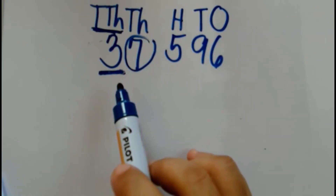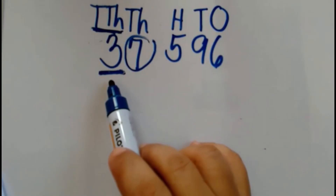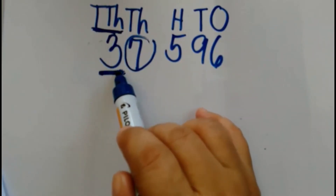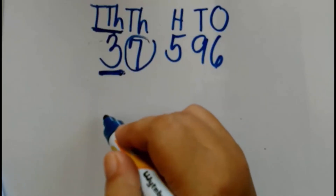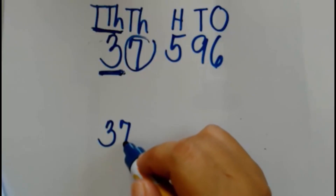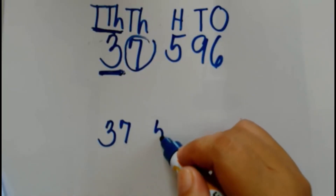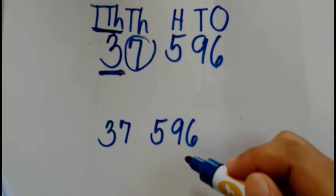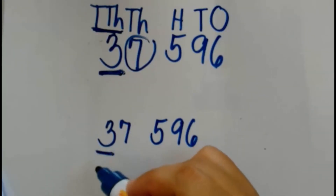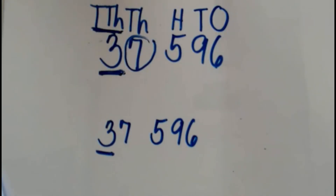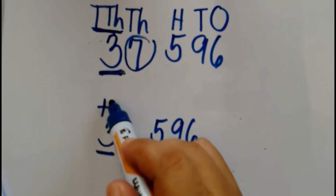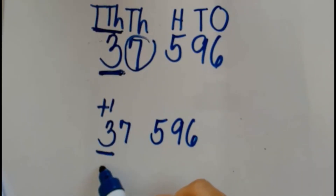Since we will be rounding up, we will add 1 to 3, since 3 is the digit that we are going to round off. So I will rewrite the number 37,596 — the digit we are rounding is 3. Since we are rounding up, we add 1 to 3. So 3 plus 1 is equal to 4.